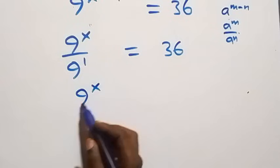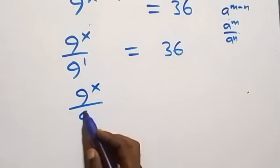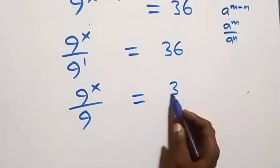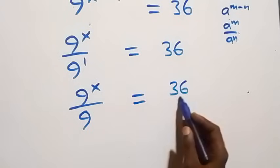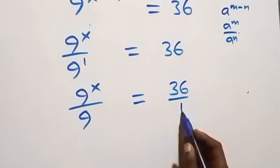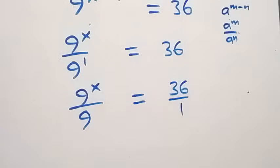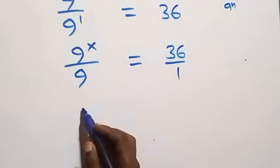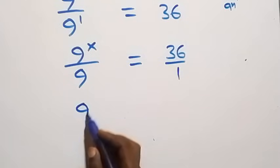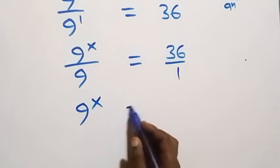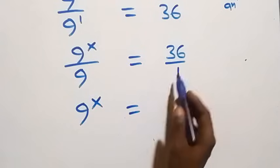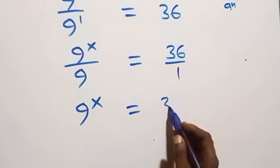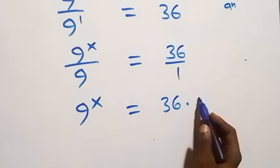This is also written as 9 raised to power x over 9, which equals 36 over 1. Then when we cross multiply, 9 raised to power x equals 36 times 9.